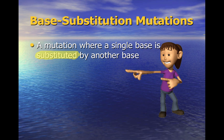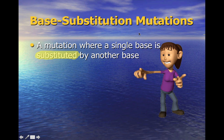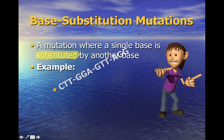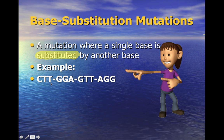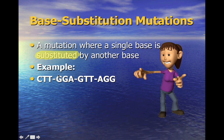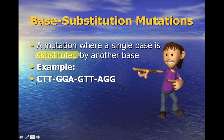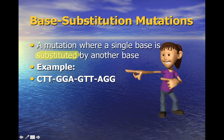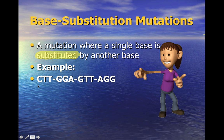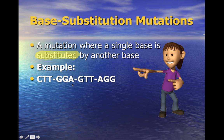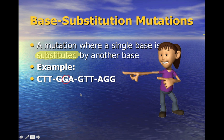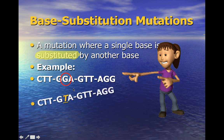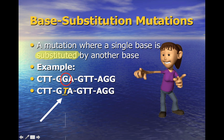Two types of mutations you should be familiar with: first, a base substitution mutation — a base gets substituted by another base. For example, here you have a gene sequence: CTT GGA GTT AGG, separated into groups of three because every three letters codes for an amino acid. We read them in groups of three, and each group of three bases is called a codon.